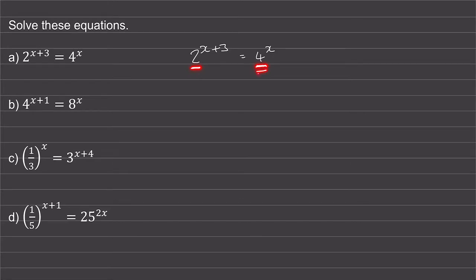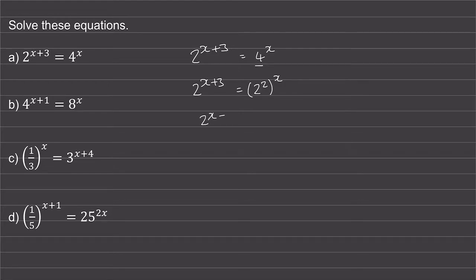We can write the 4 as 2 squared. So on the left hand side we have 2 to the power of x plus 3. And on the right hand side we can write this 4 as 2 squared, which we're raising to the power of x. Now we can use the power rule to multiply the 2 and the x together. So we have 2 to the power of x plus 3 is equal to 2 to the power of 2x.